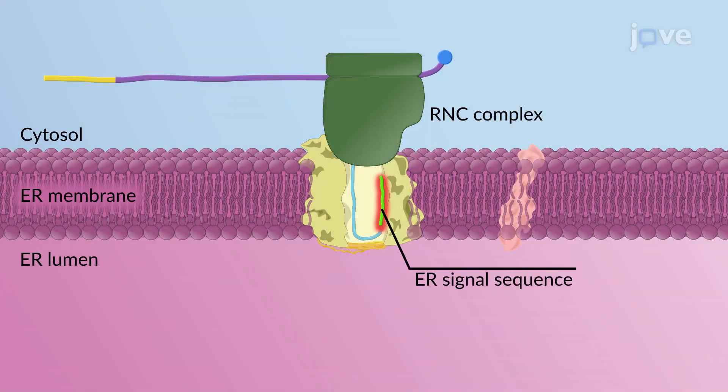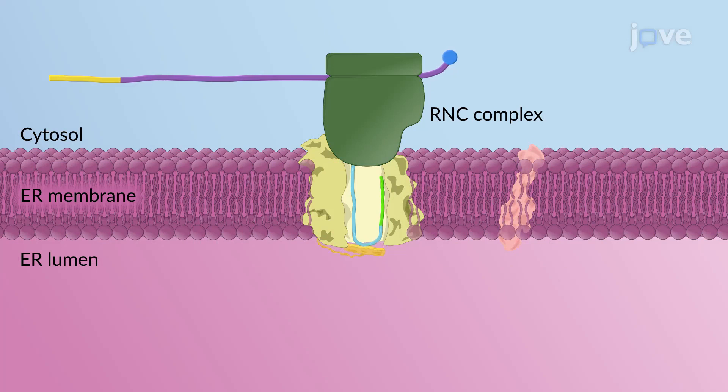The ER signal sequence of a transmembrane protein acts as a start-transfer signal for translocation through the SEC61 channel on the ER membrane.